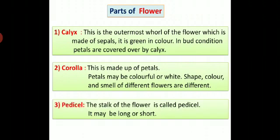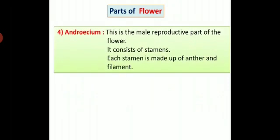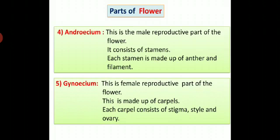Pedicel: the stalk of the flower is called pedicel. It may be long or short. Androecium: this is the male reproductive part of the flower. It consists of stamens. Each stamen is made up of anther and filament. Gynoecium: this is the female reproductive part of the flower. This is made up of carpels. Each carpel consists of stigma, style and ovary.